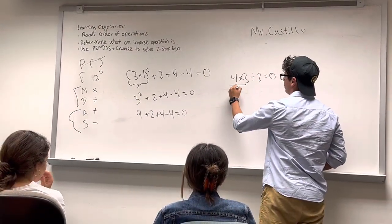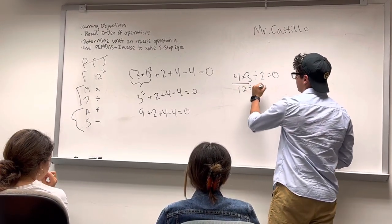So in this case we do 4 times 3 first, which is 12, divided by 2, which is 6. And so that's...